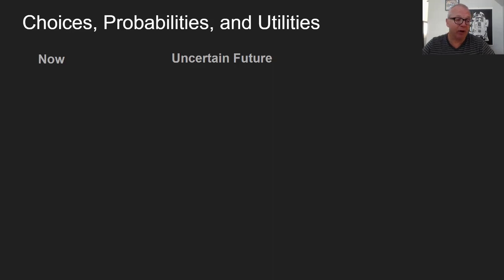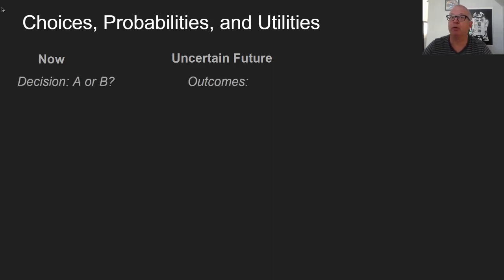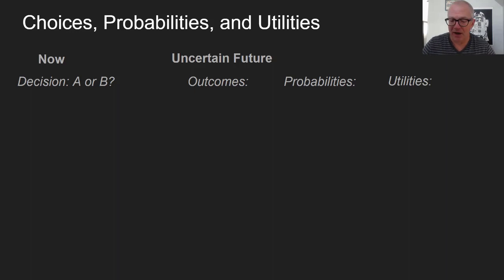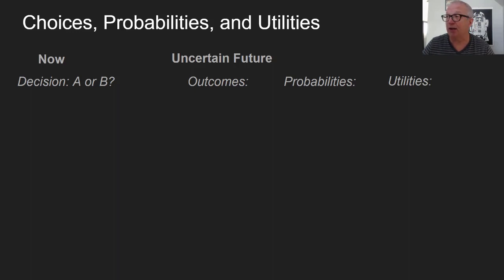What's happening is we're giving a mathematical model for something that we sort of do intuitively — we're going to formalize it. Here you are in the moment making a decision. You're trying to decide whether to do A or B, and the future is uncertain. Those outcomes have probabilities and utilities. Utility is the concept we're using to measure whatever it is we value — money, time, pleasure, whatever. We just need to put a number on it and plug it into the formula.